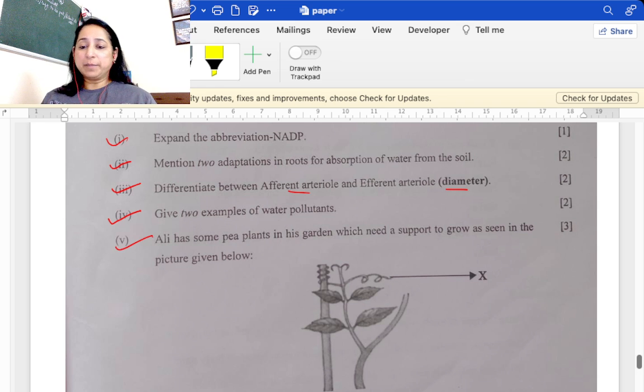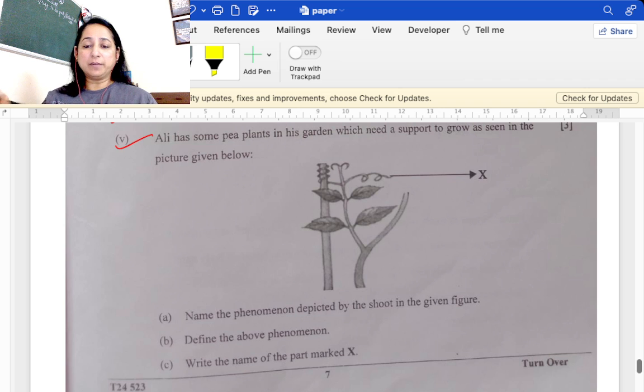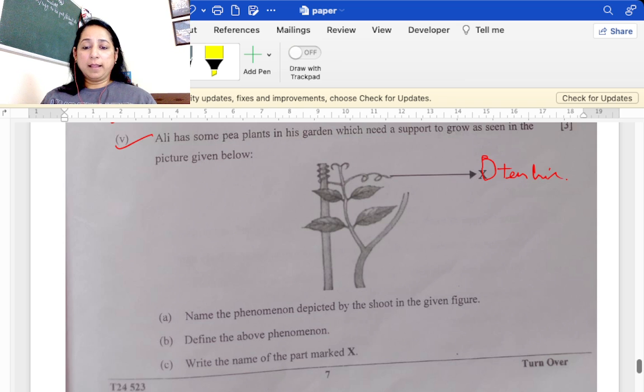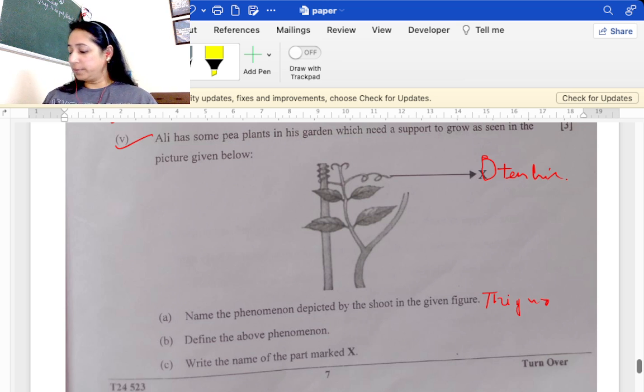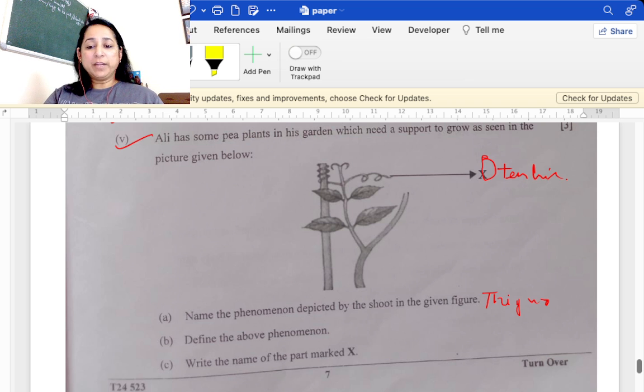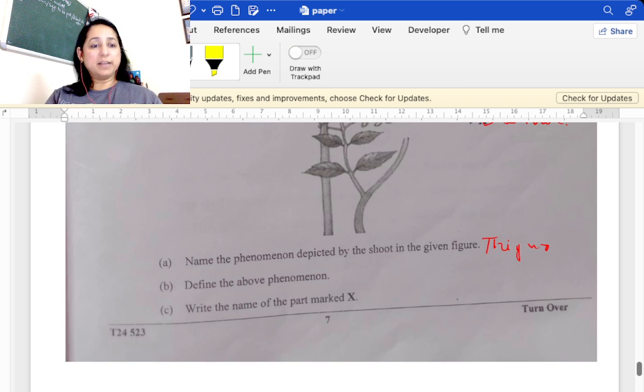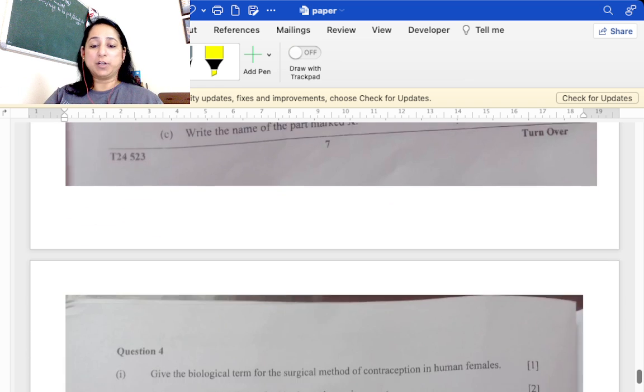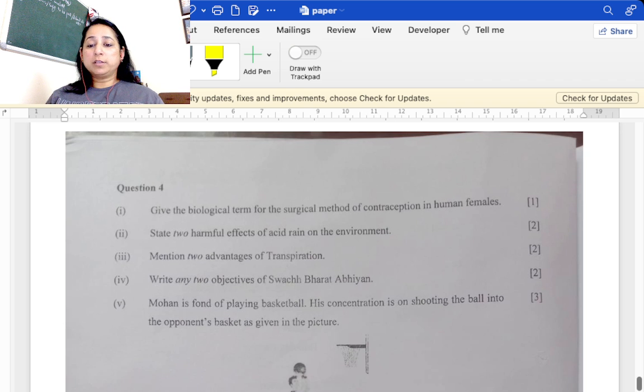Ali has some pea plants. You can see clearly it's a pea plant with tendril, so X is tendril. Name the phenomena depicted in it: the phenomena is thigmotropism. Thigmotropism is whenever a substance moves in response to touch. Write the name of part X, that is tendril.